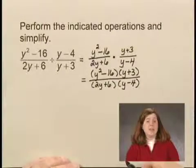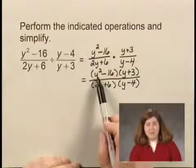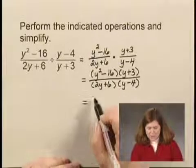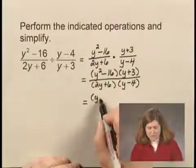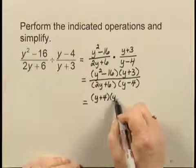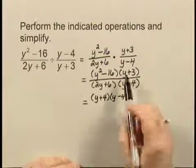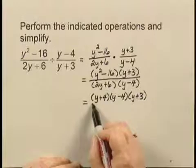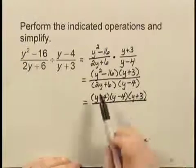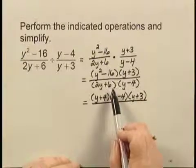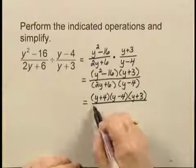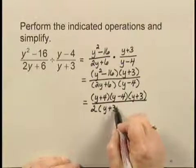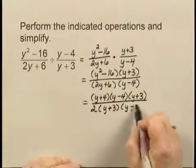Now, if I can, I factor. I can factor y squared minus 16 because that's the difference of squares. That factors into y plus 4 times y minus 4, multiplied by the factor y plus 3. In the denominator, the factor 2y plus 6 has a common factor of 2, so I factor out a 2: I have 2 times y plus 3 times y minus 4.